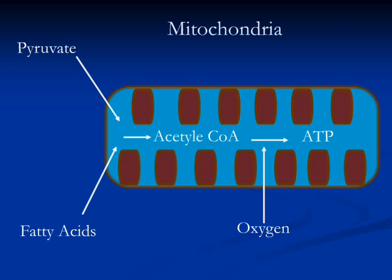Fatty acids transported from blood to cytosol, and pyruvate produced in cytosol from glucose by anaerobic metabolism, both move to mitochondria. Both are converted into acetyl coenzyme A within mitochondria. Oxygen absorbed from the lungs is eventually transported to cells, where it reacts with acetyl coenzyme A within mitochondria to produce enough adenosine triphosphate to fulfill the cell's energy requirement. Carbon dioxide and water are byproducts, and carbon dioxide is removed from the cell as a waste product.